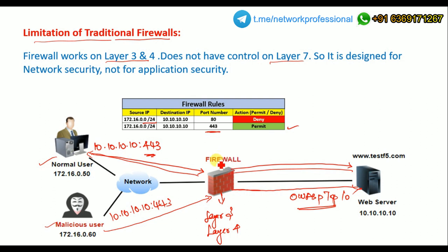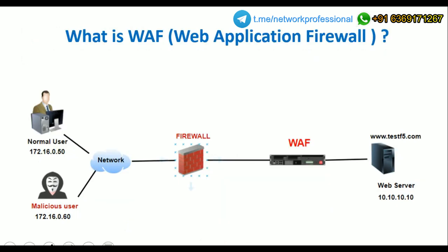This is the main limitation and drawback of traditional firewalls. While they are useful and provide network security based on IP address and port number, they cannot protect applications. Legacy firewalls cannot prevent application-layer attacks. Hackers work at Layer 7 — using OWASP Top 10 attacks or HTTP flood attacks — which easily pass through a traditional firewall and then manipulate the application server.